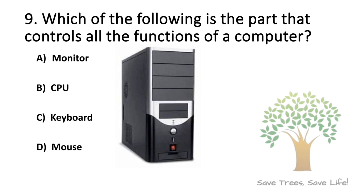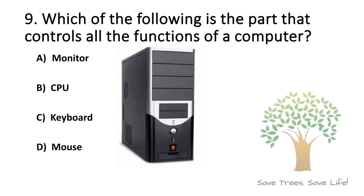Question number 9. Which of the following is the part that controls all the functions of a computer? Option A: Monitor, Option B: CPU, Option C: Keyboard, Option D: Mouse. So the answer is Option B: CPU.